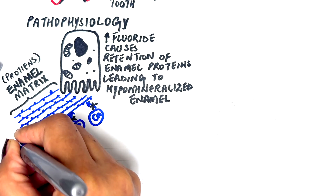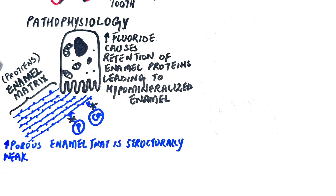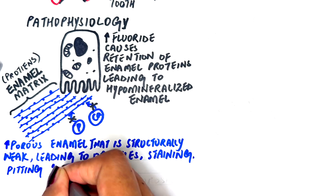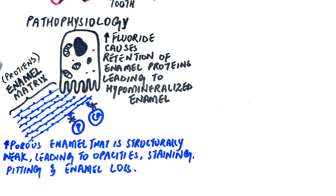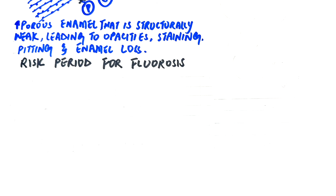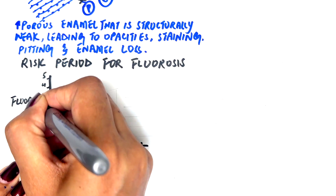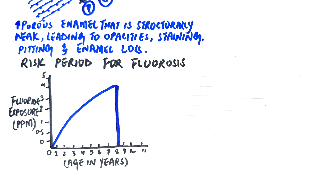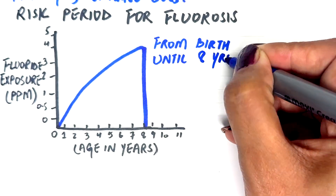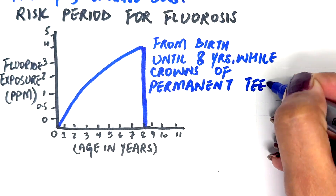This enamel is more porous and structurally weak, leading to characteristic white opacities, staining, and in severe cases, pitting and enamel loss. The risk period for dental fluorosis occurs from birth until around eight years of age, while the crowns of permanent teeth are still developing.